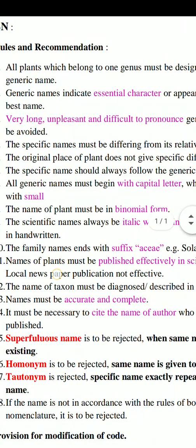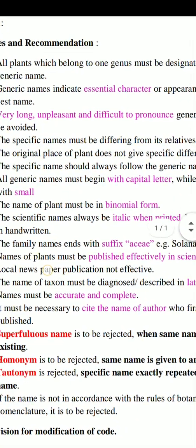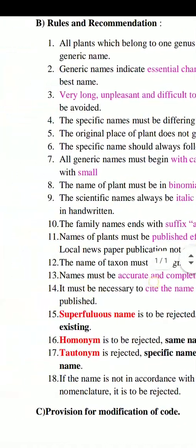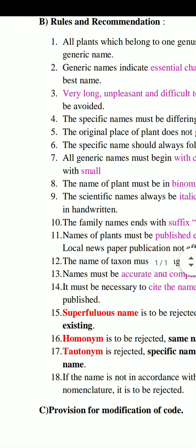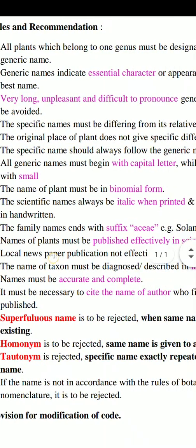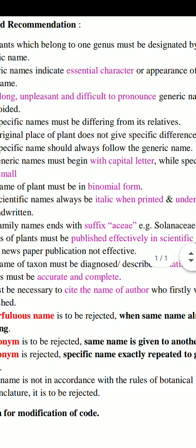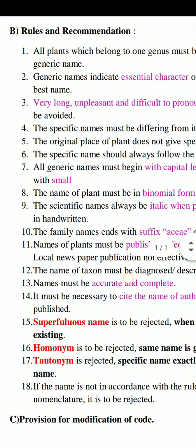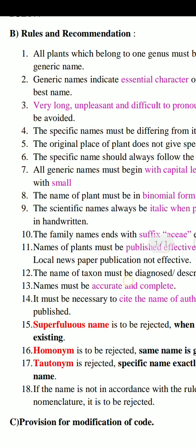Rule 5: The original place of a plant does not give a specific difference. Rule 6: The specific name should always follow the generic name — that means first write the generic name and then the species name.